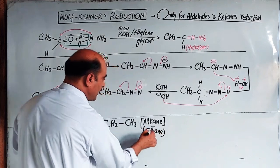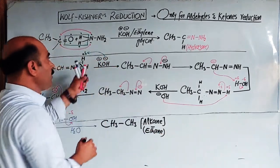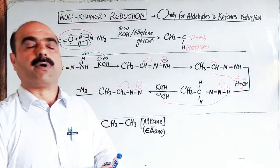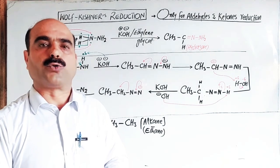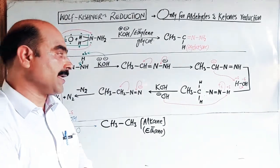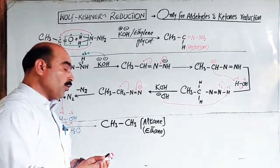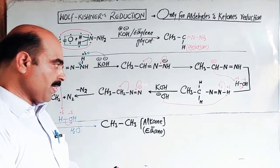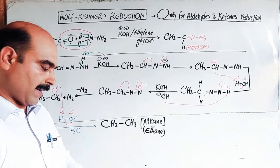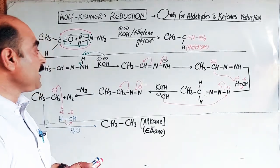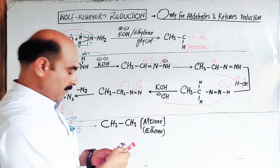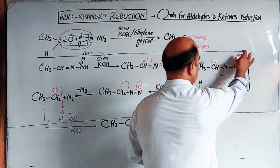In summary, the Wolf-Kishner reduction converts carbonyl compounds — aldehydes and ketones — into hydrocarbons, specifically alkanes. The carbonyl group (C=O) is fully reduced to CH2, removing oxygen and adding hydrogen. This is the basic meaning and process of this reduction.